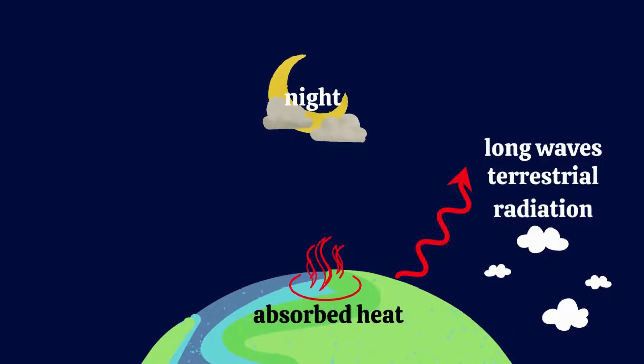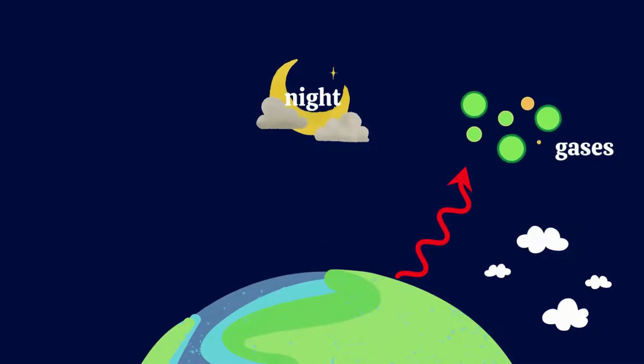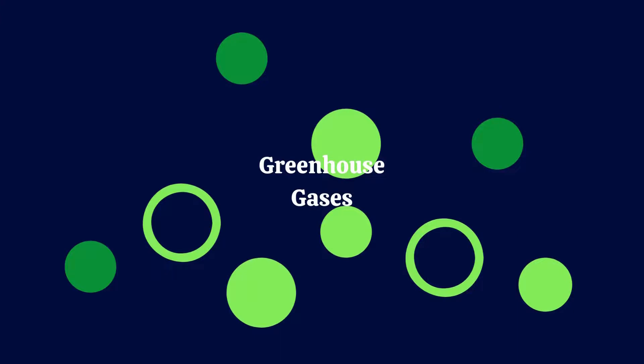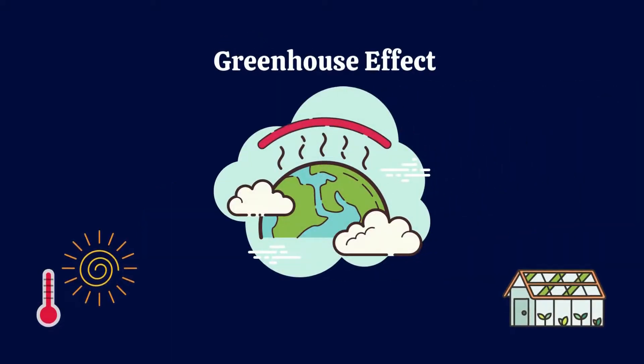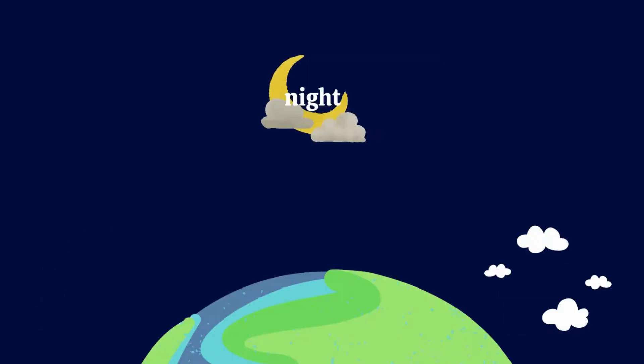This radiation can then be absorbed by gases in the atmosphere, specifically greenhouse gases that trap heat and make our planet warm enough to survive on. This process is called the greenhouse effect and I will elaborate more on this concept in an upcoming video.